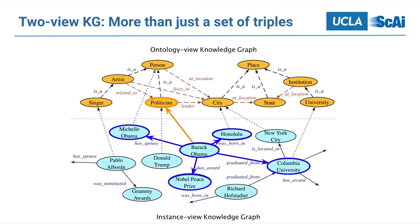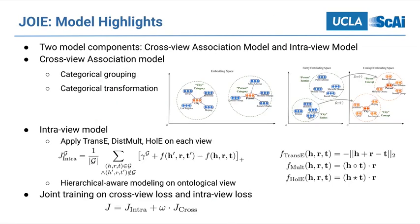These two views are different but highly related, and both require careful modeling. In this paper, we propose Joey, a knowledge graph representation learning model, by jointly learning on both views of the KG. More specifically, we design a cross-view model and an inter-view model. For the cross-view model, we aim at modeling the many-to-one association between entities and corresponding concepts by categorical grouping or transformation. In the inter-view model, we apply three most representative approaches — TransE, DistMult, or HolE — to embed the relational structures in each view. Finally, we combine the two sub-modules and jointly train our Joey model.